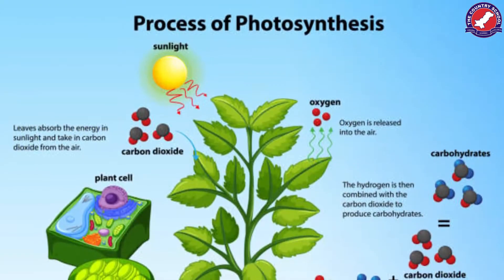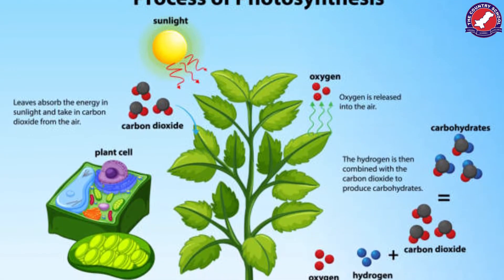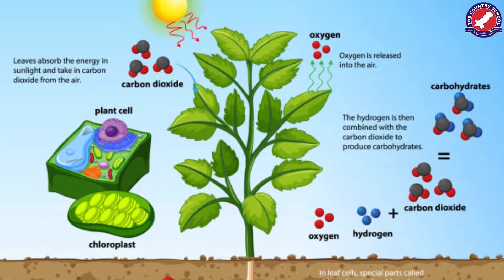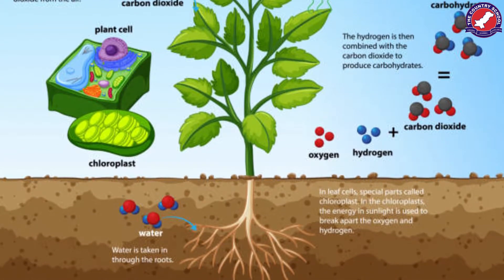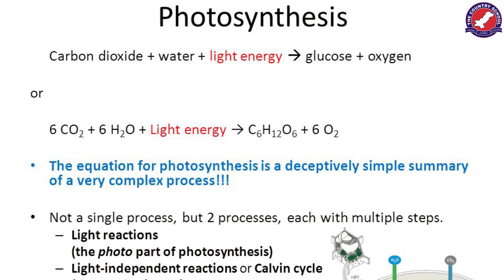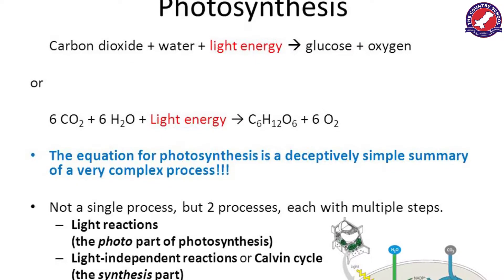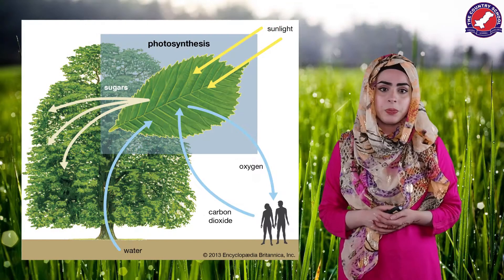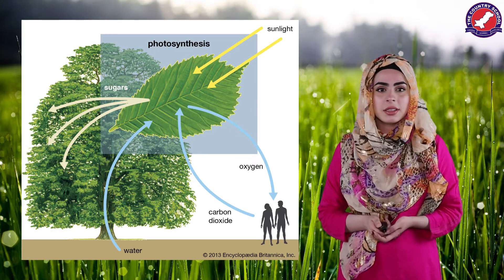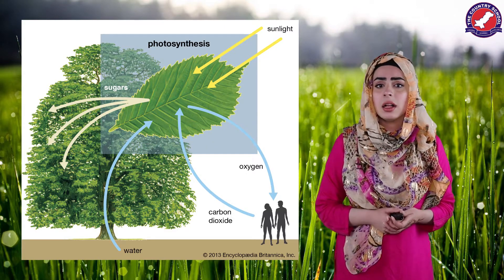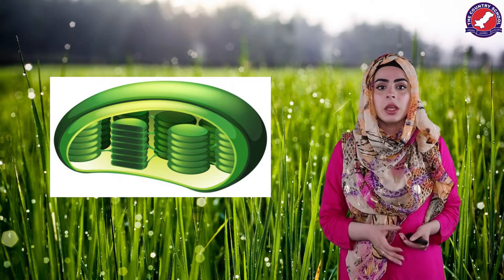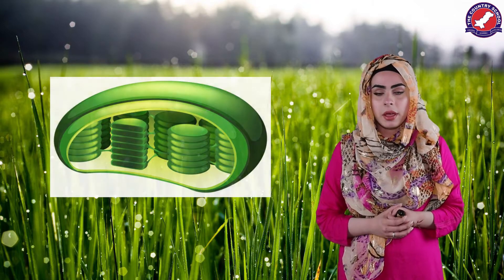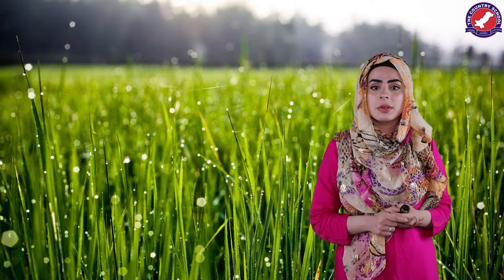A plant absorbs carbon dioxide from the air through tiny holes in its leaves, branches, stems, flowers, and roots. It also absorbs water from the soil through its roots and light energy from the Sun to perform photosynthesis. Light energy triggers a chemical reaction, breaking down carbon dioxide and water molecules and rearranging them to create glucose and oxygen gas. The oxygen gas produced goes back into the atmosphere via the same tiny holes that absorb the carbon dioxide.